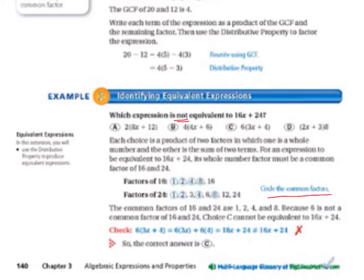Since 6 is not a common factor of 16 and 24, choice C is not going to be equivalent to 16x plus 24. Since that's what we're looking for, which expression is not equivalent to 16x plus 24, then C is our choice. We're going to put a little dot in C, and then it says check.